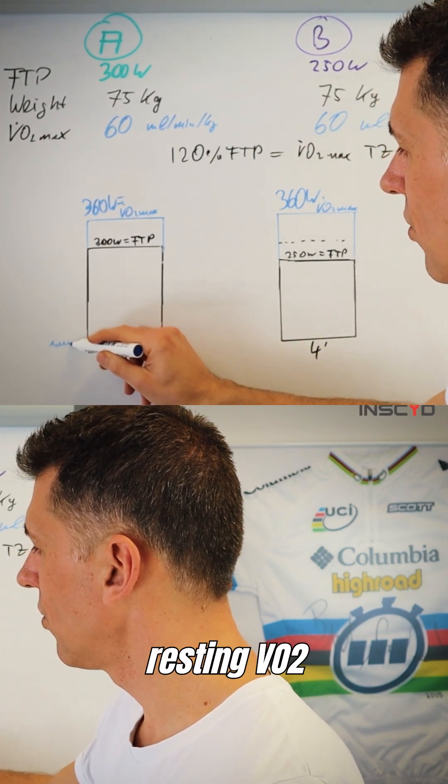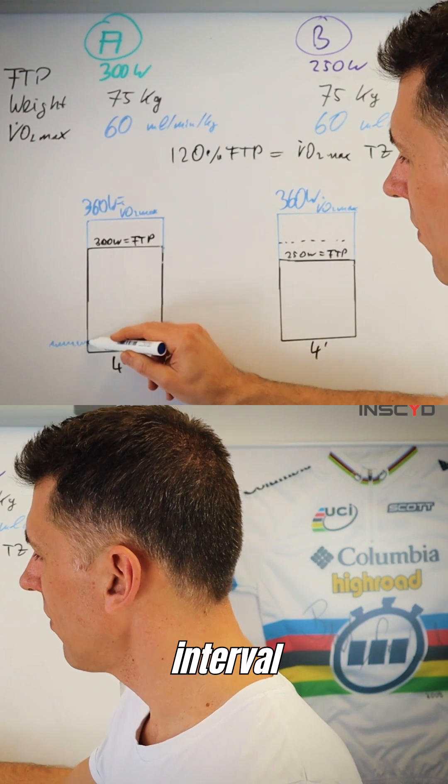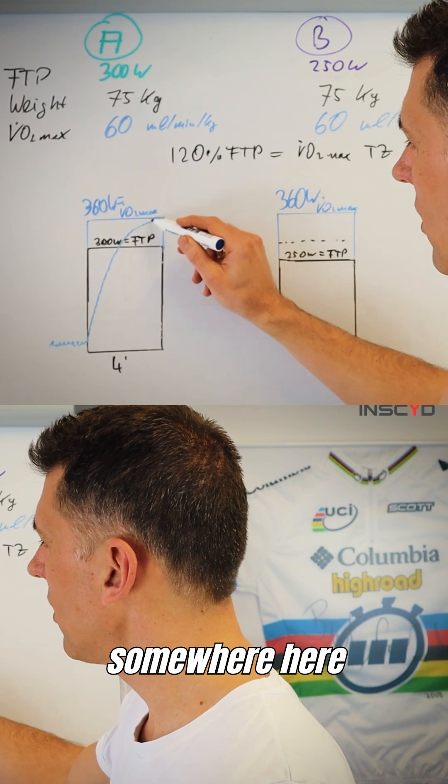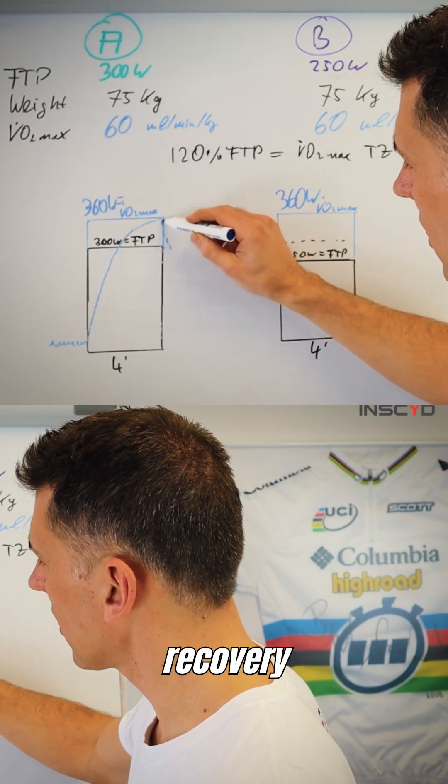So VO2, you know, you have a resting VO2 somewhere down here, and then during the interval, there's this fast phase, right? It goes up, somewhere here close to VO2max, and then there comes the recovery period.